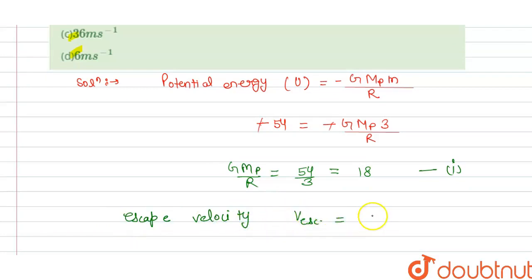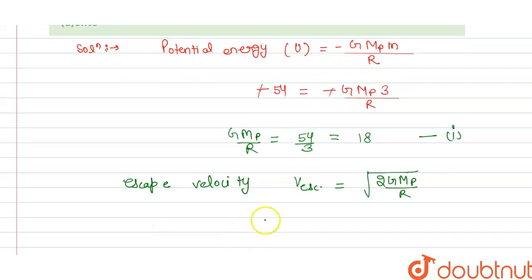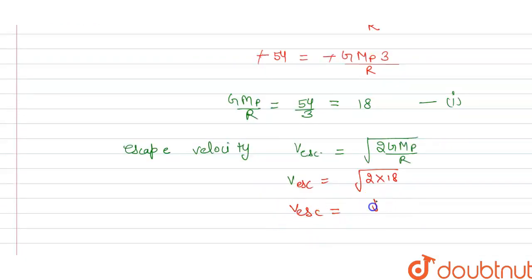The escape velocity V_escape equals the square root of 2GM divided by R. Substituting the value from equation 1, V_escape equals the square root of 2 times 18, which is the square root of 36, which equals 6 metres per second. So this is the answer.